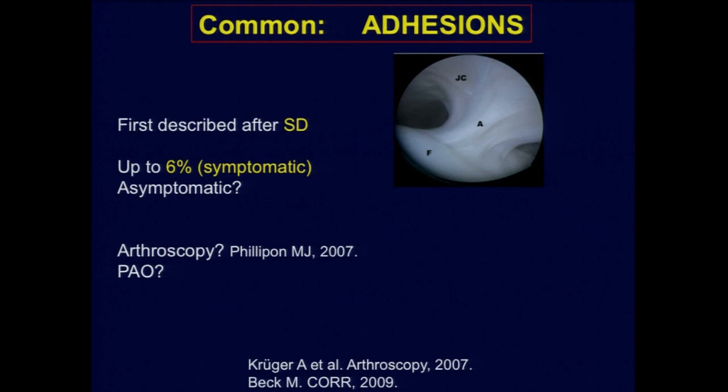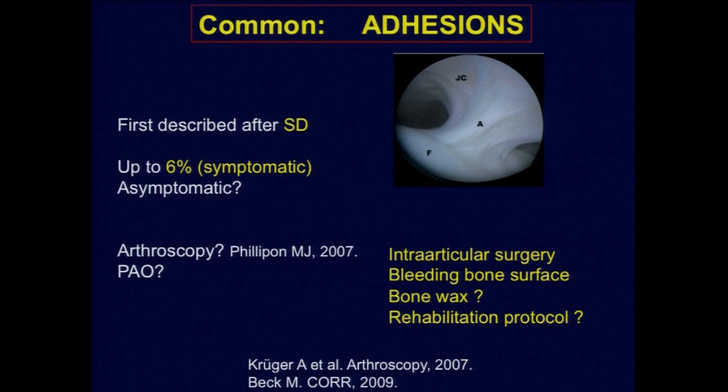Common complications are adhesions. First, this was described after surgical dislocation of the hip with an incidence up to 6% — these were the symptomatic cases. The problem is we don't know how many patients really have adhesions that are asymptomatic. In hip arthroscopy it has been described, but there are no numbers. And in PAO, we don't know. I had a case of reverting PAO with massive adhesions which I needed to scope afterwards.